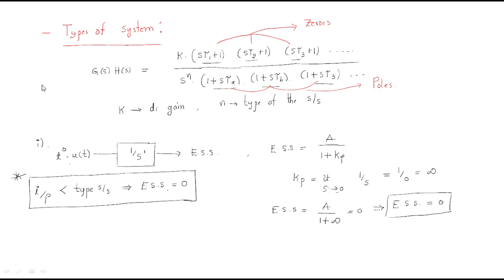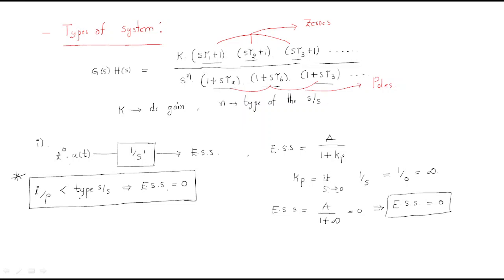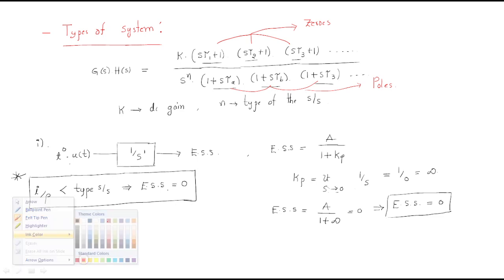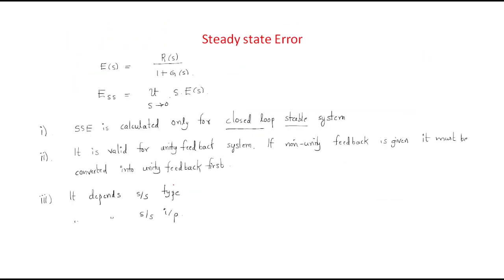To summarize: whenever the input power in terms of t is less than the system type in terms of s, the steady-state error becomes 0. This is the key point for understanding steady-state error in relation to types of systems. I hope all of you understand the session. Thank you.